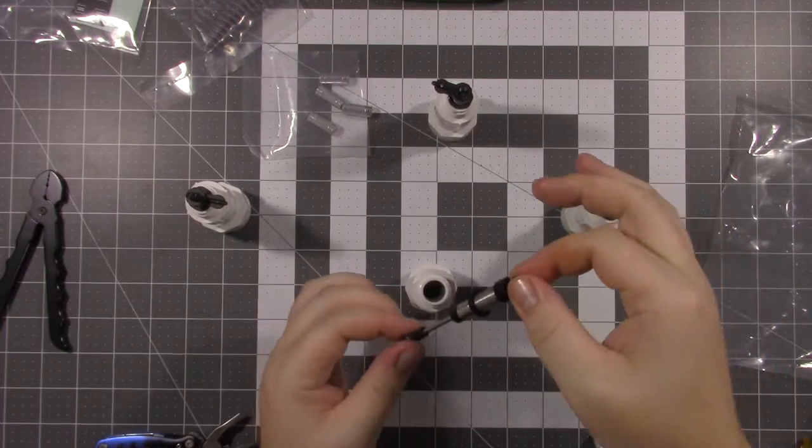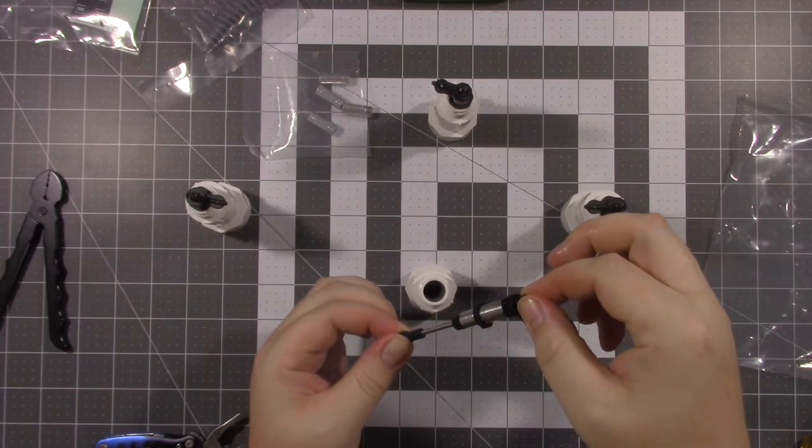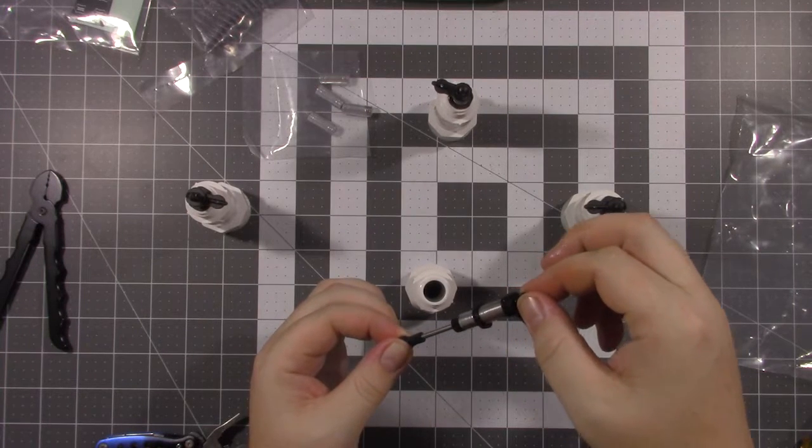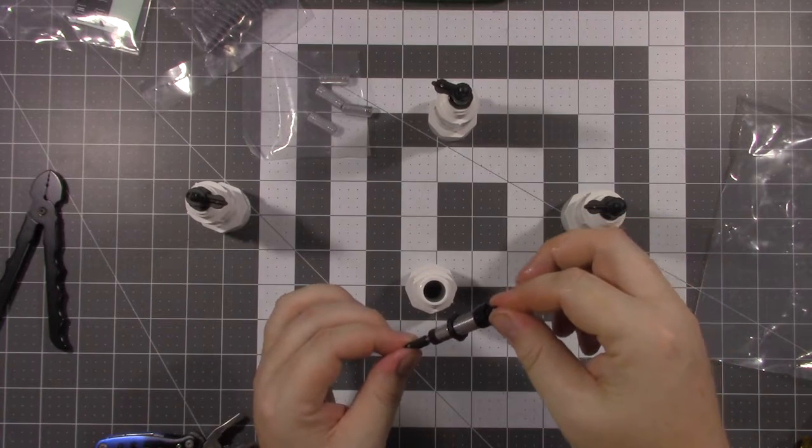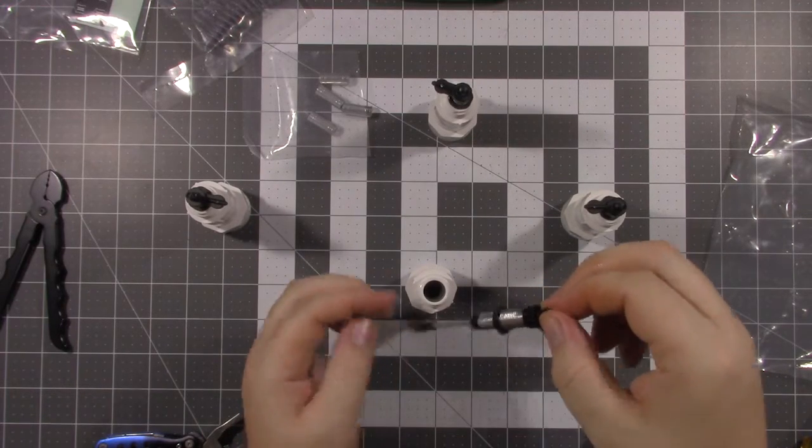Now once I get the shocks put together, what I like to do is just kind of cycle the shock and see if there's any leaks. Maybe you don't have something tight enough, but it looks like we're doing pretty good here. So we're ready to move on the next step which is finishing up this shock build.